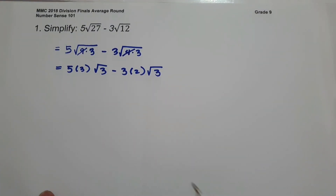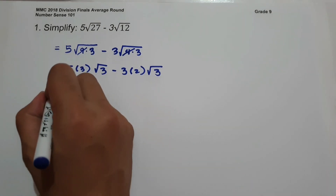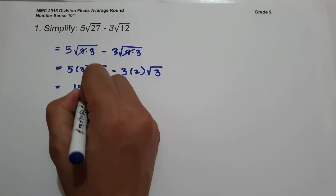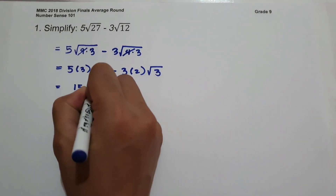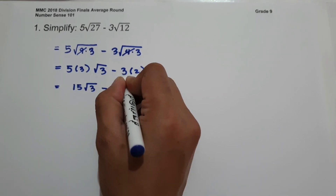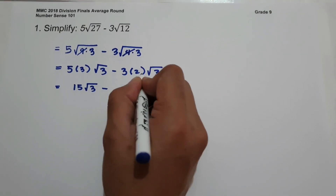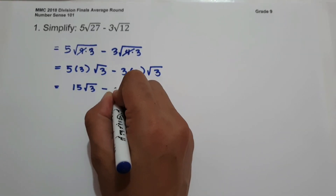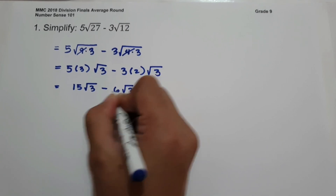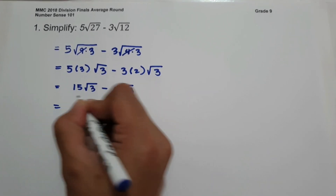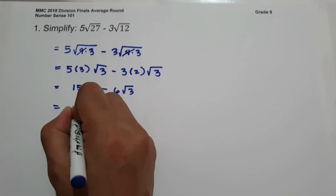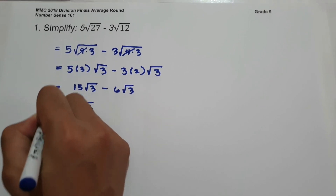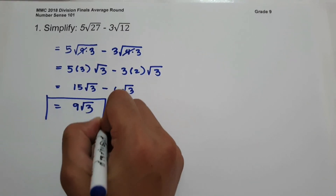Simplifying: 5 times 3 is 15, square root of 3, minus 3 times 2 is 6, square root of 3. So 15 minus 6 is 9, square root of 3. And this will be our answer.